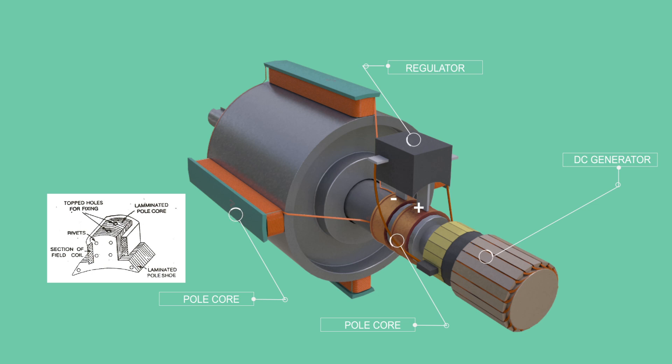With variation of load on the generator, terminal output voltage will vary. It is desired to keep the terminal voltage within a specified limit. An automatic voltage regulator helps in achieving this.